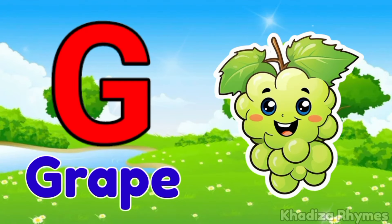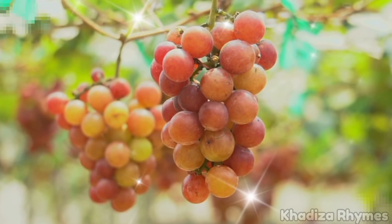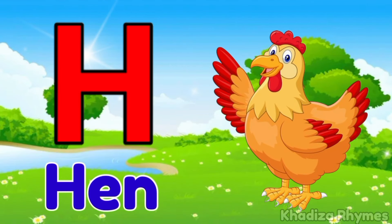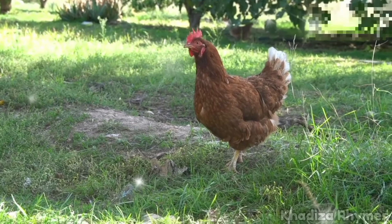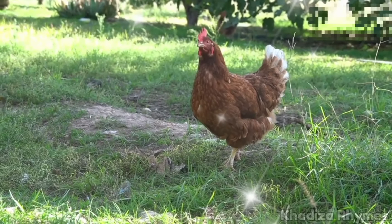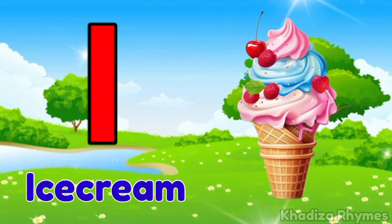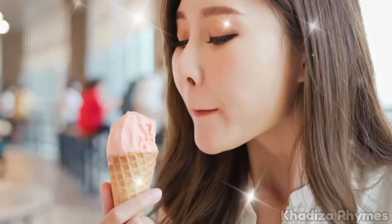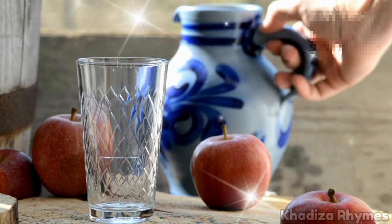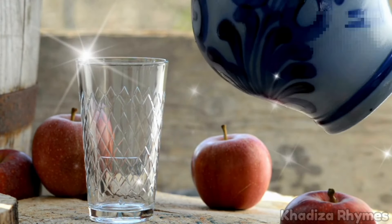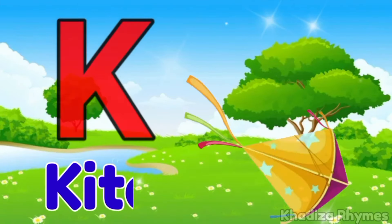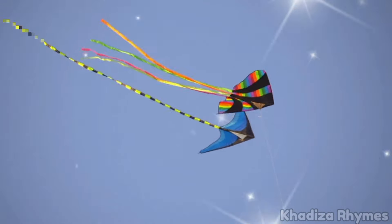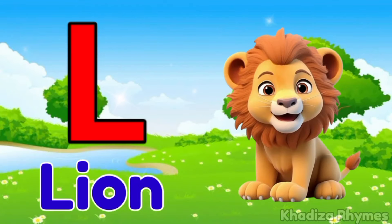G. G for Crab. H. H for Hen. I. I for Ice Cream. J. J for Jag. K. K for Kite. L. L for Lion.